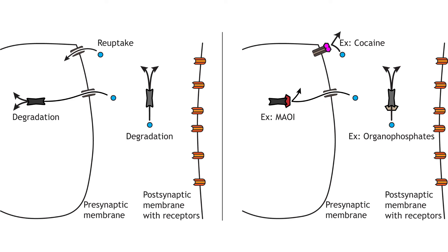Finally, neurotransmitter degradation and reuptake can also be altered by drugs and toxins. Depending on the neurotransmitter, enzymes located in either the synapse or in the terminal are responsible for degradation of the transmitter, and these enzymes can be blocked by drugs. Organophosphates are found in many pesticides and prevent the action of acetylcholinesterase, the enzyme that breaks down acetylcholine in the synapse. This inhibition increases acetylcholine action on the postsynaptic neuron.